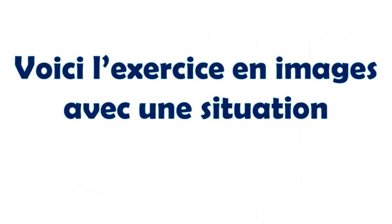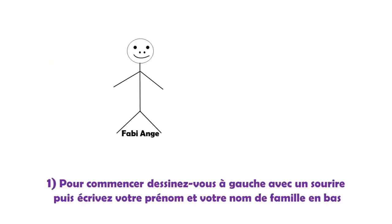Voici l'exercice en image avec la situation. Première étape. Pour l'exercice, je me mets en situation. Je commence toujours par me dessiner en premier à gauche de la feuille. Vous dessinez la tête, les yeux, le nez, le sourire — qui est très important, le sourire. Ne pas dessiner une bouche fermée. Puis, je dessine le corps, les bras et les jambes, comme sur le dessin. Après cela, j'écris mon prénom Fabie et mon nom de famille, Ange, en bas.